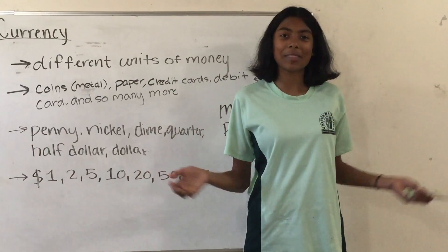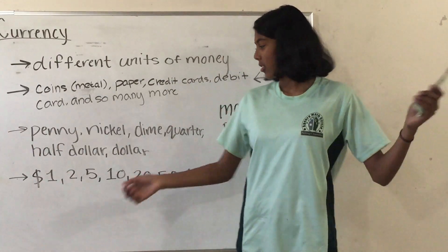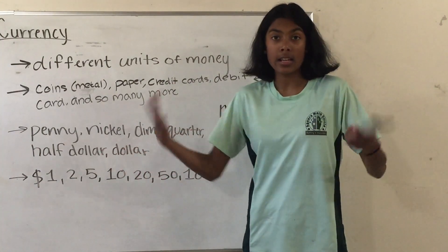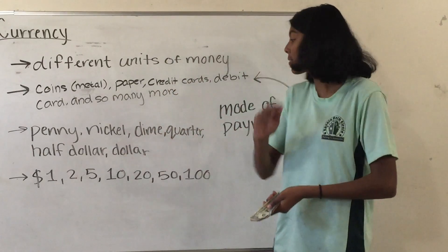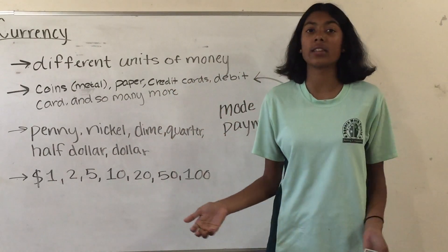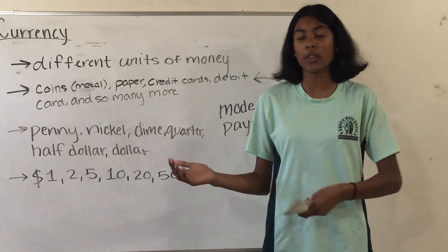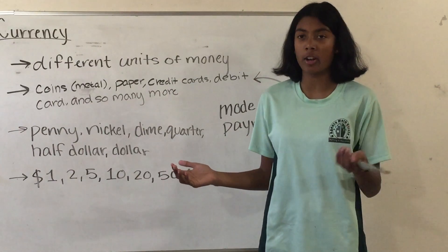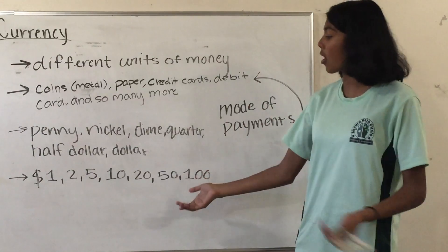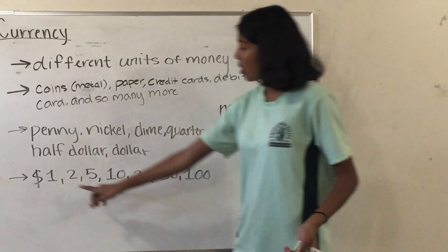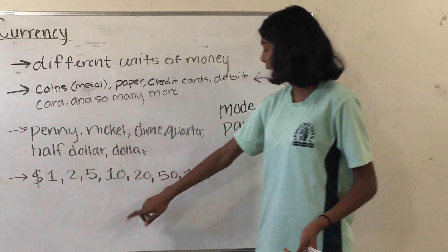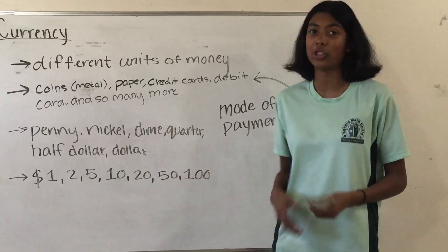Here are some examples of our U.S. currency. For coins we have our penny which is one cent, nickel which is five cents, dime which is ten cents, quarter which is 25 cents, half dollar which is 50 cents, and one dollar which is 100 cents. And then we have our paper ones: we have one, two, five, ten, twenty, fifty, and a hundred.